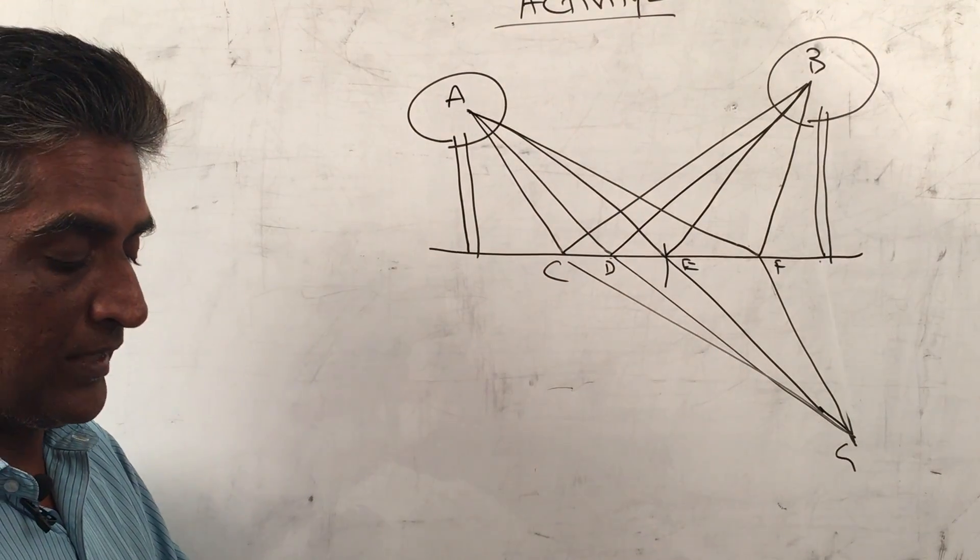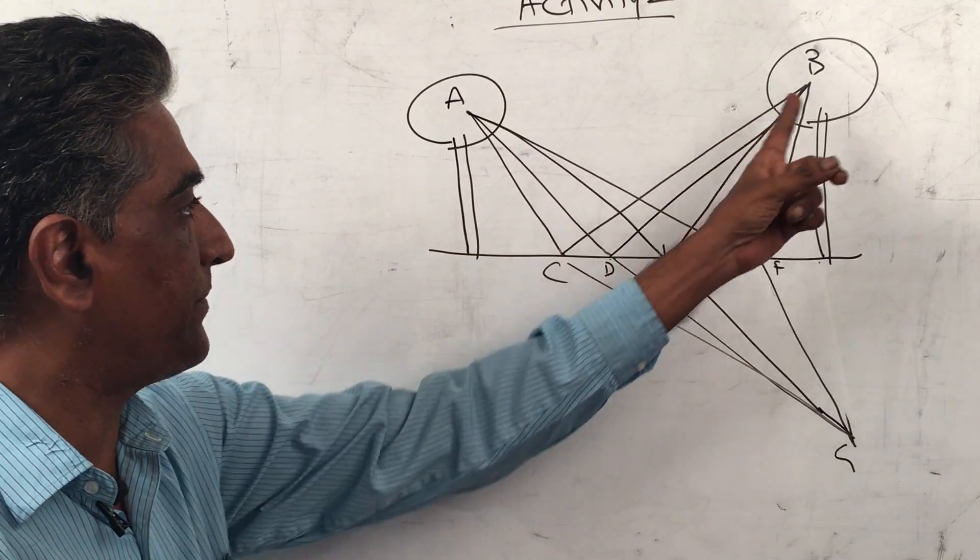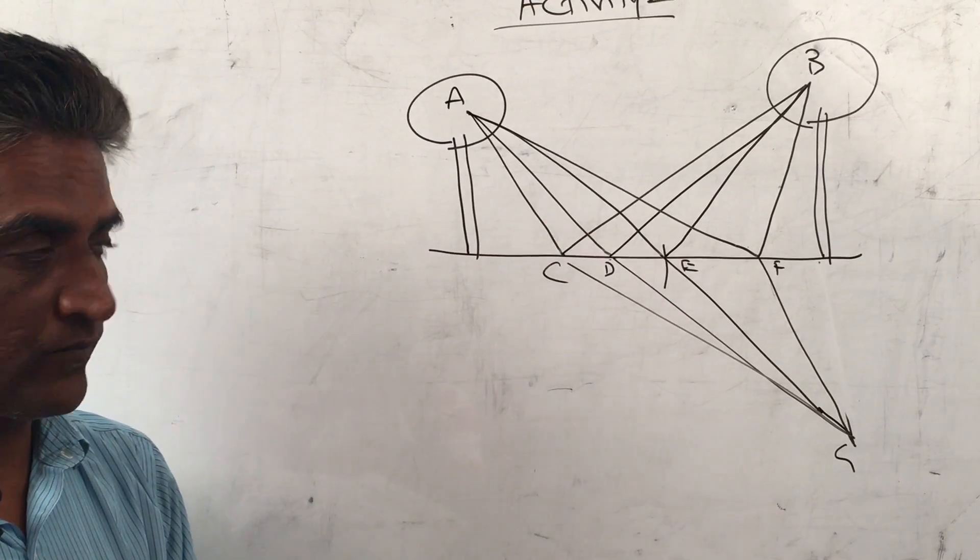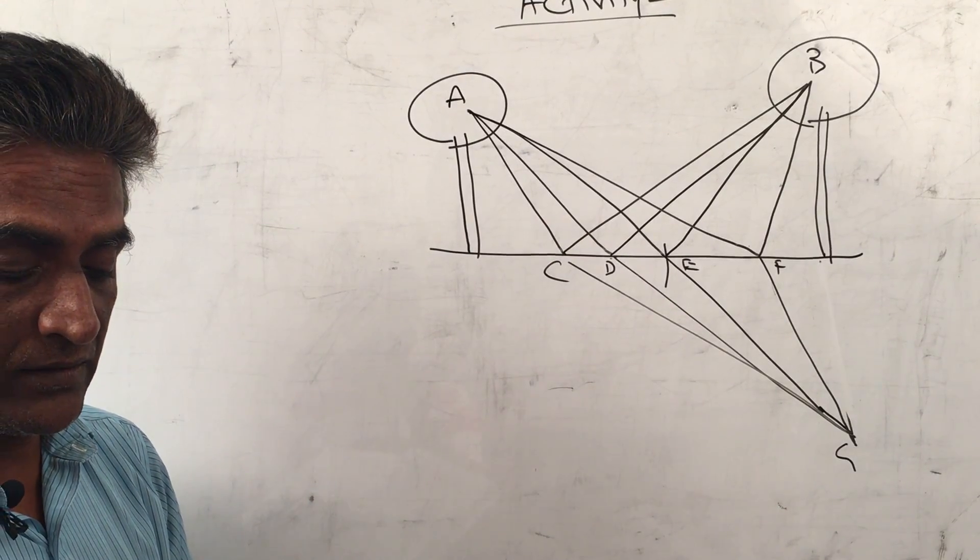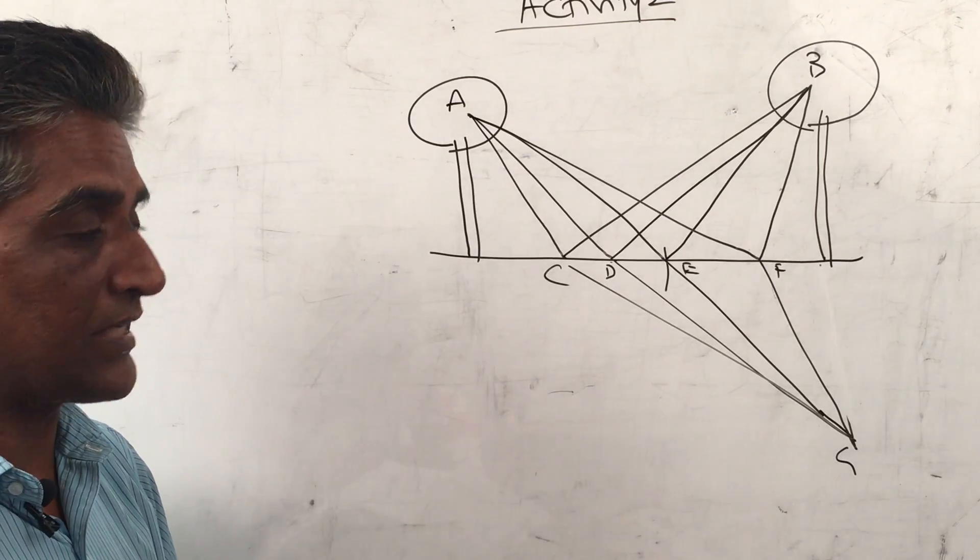Let us find the shortest path. Observe some of the paths in figure 3. Which among the paths ACB, ADB, AEB, AFB is the shortest path?